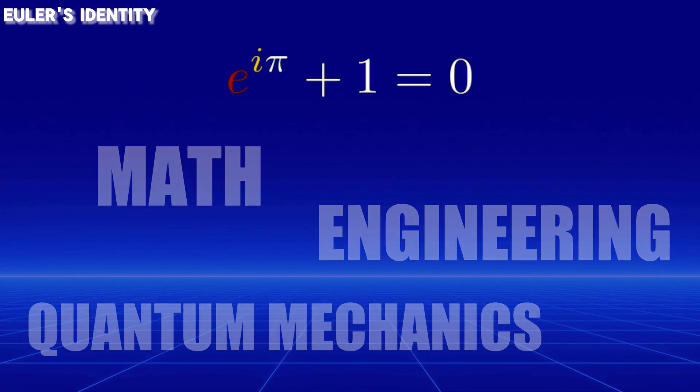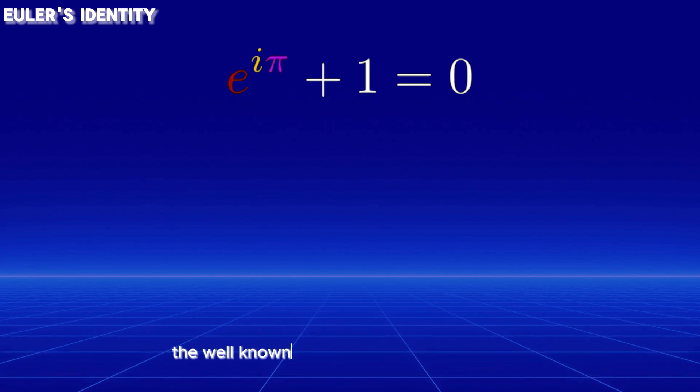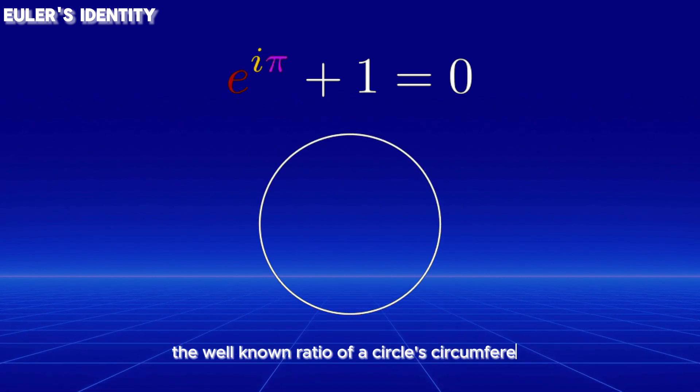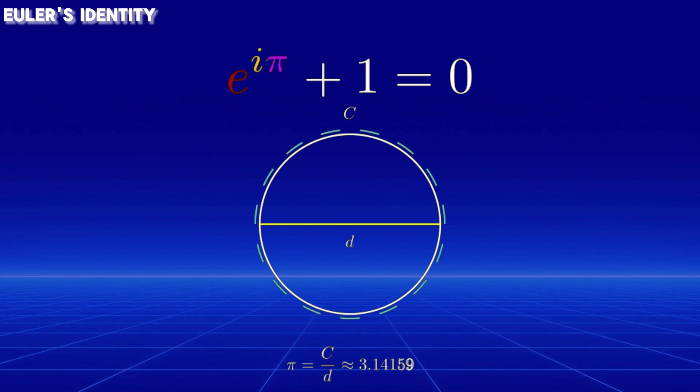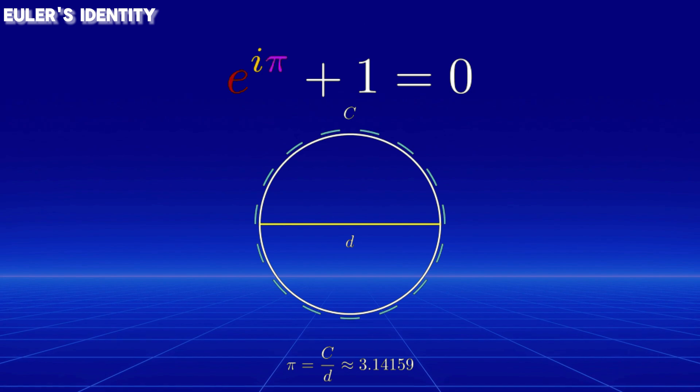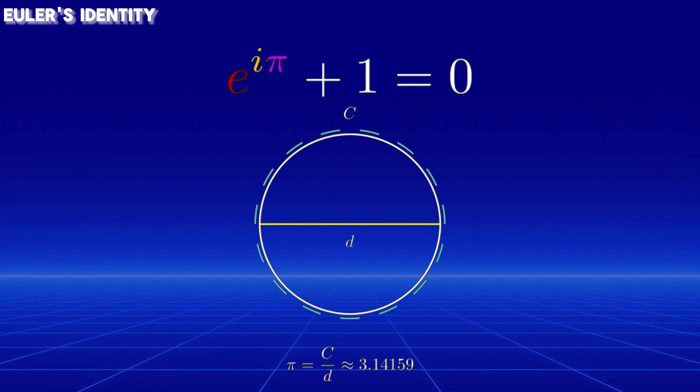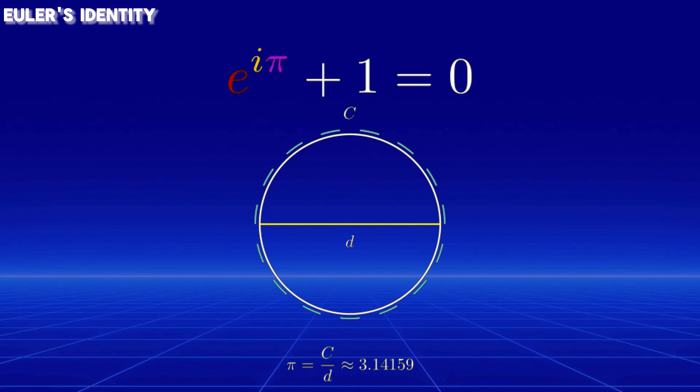Then, there is pi, the well-known ratio of a circle's circumference to its diameter, approximately 3.14. It's an irrational number that appears in countless equations across geometry and physics.